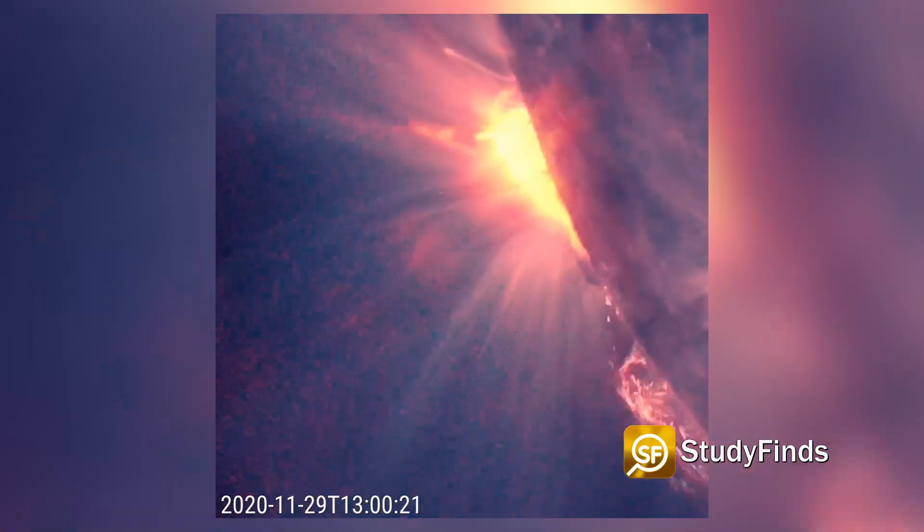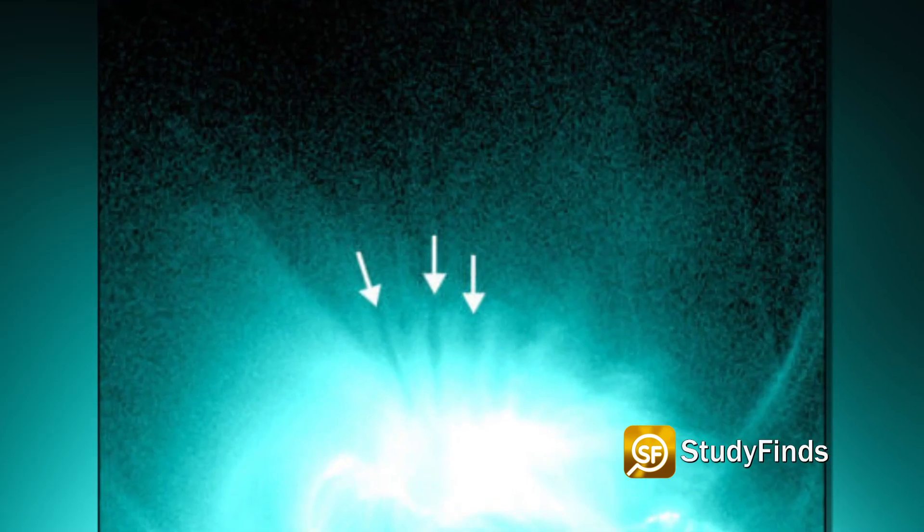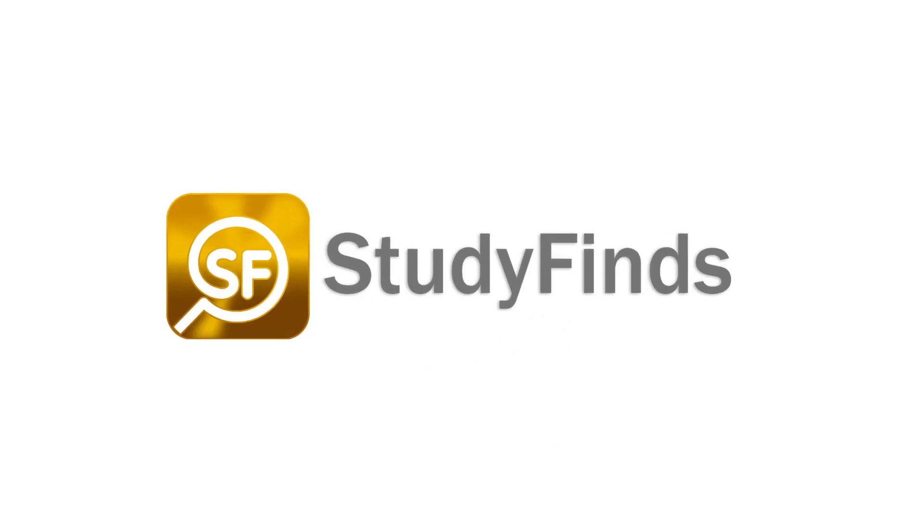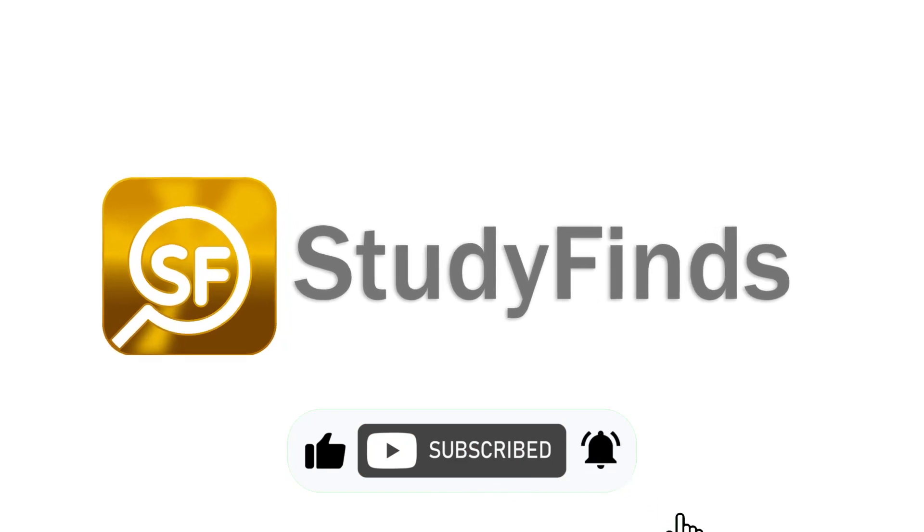After 20 years, scientists have discovered the cause of a mysterious solar flare with dark finger-like features. That's in a report at Study Finds, where we invite you to like and subscribe for the latest information.